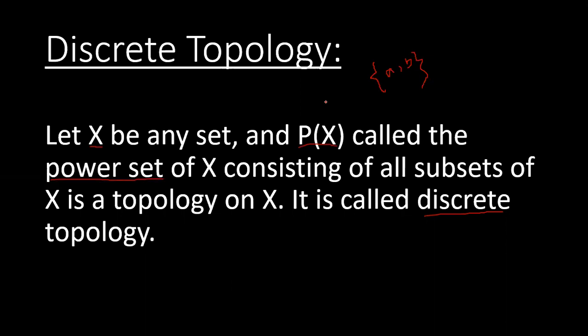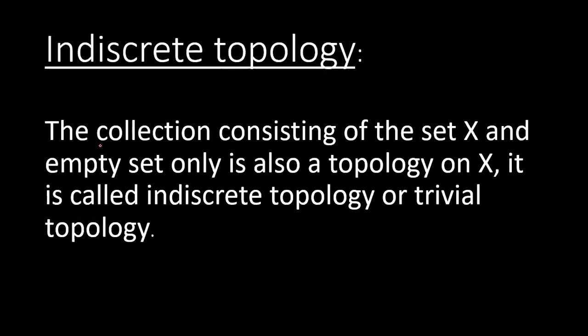In indiscrete topology, the collection consisting of the set X and empty set φ only is also a topology on X. It is called indiscrete topology, and we also call it trivial topology. This type of topology consists of only φ and the set X, that is, the space itself.